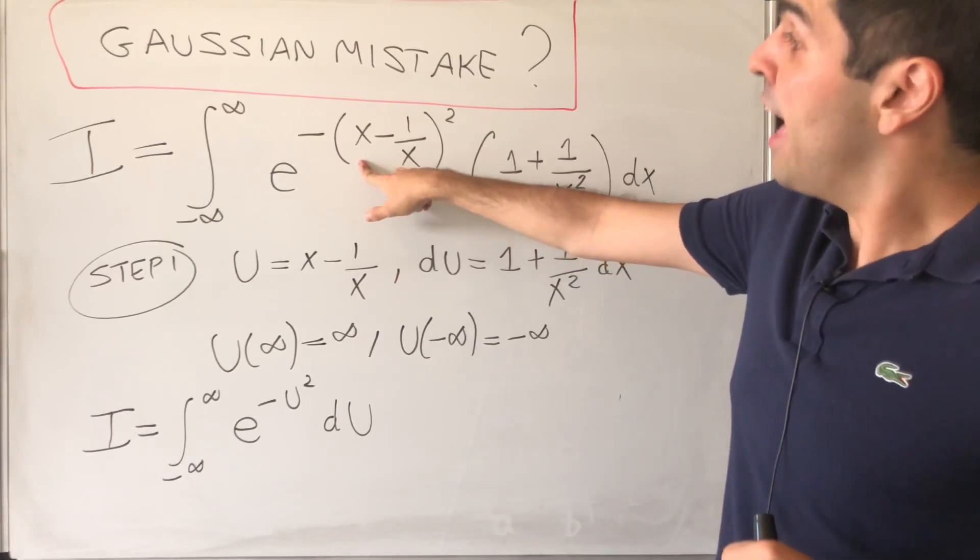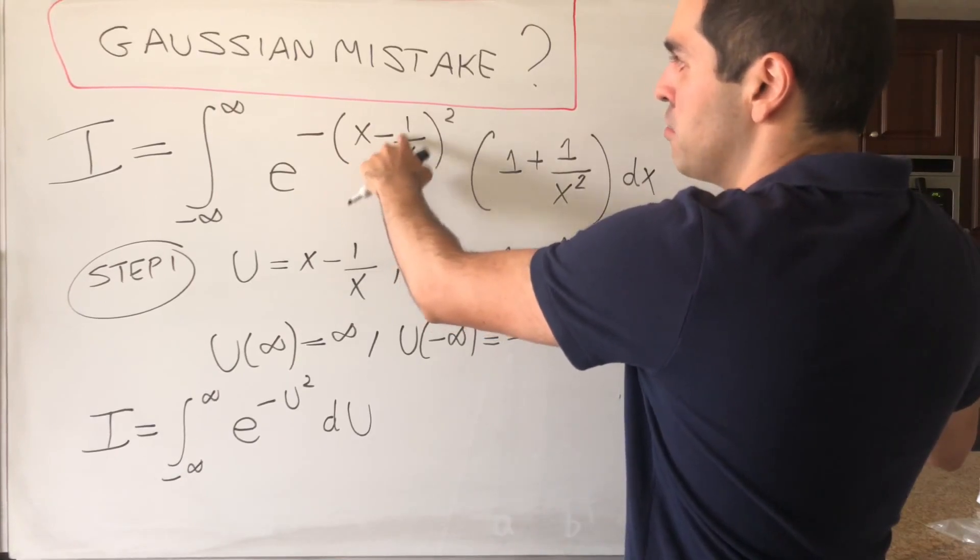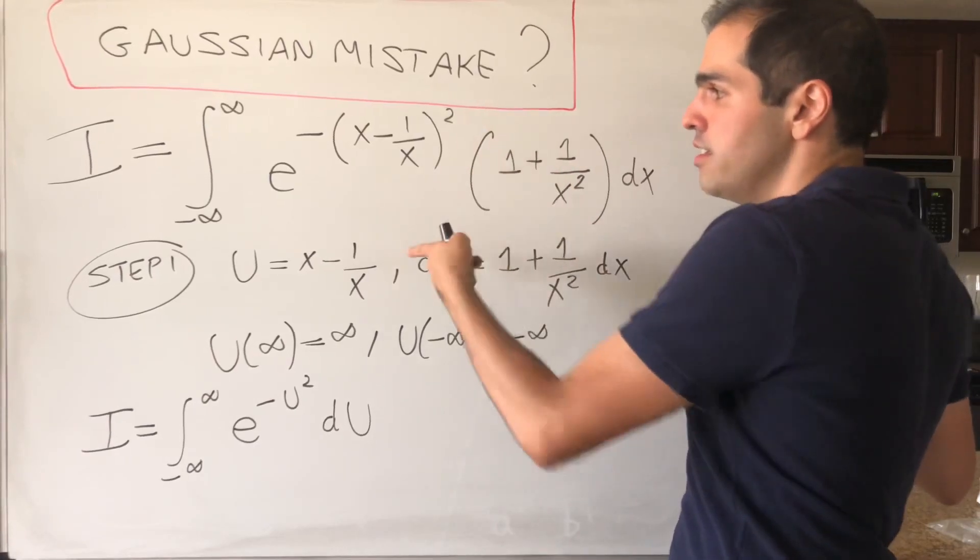On the other hand, notice this function is actually even. If you do minus x plus 1 over x and u squared it doesn't matter, and also this is even.